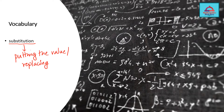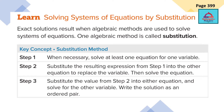Let's see how we solve the problems in today's session. There are three steps we are going to follow for solving systems of equations by substitution. This is an algebraic method. Step one: when necessary, solve at least one equation for one variable.